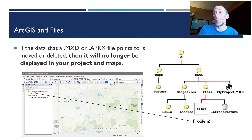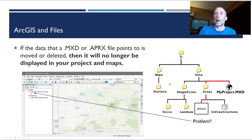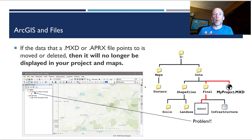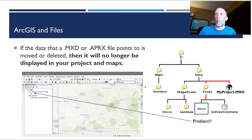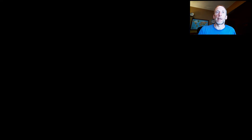The same problem happens if you move the MXD itself. If you move the MXD to a different folder, that new folder won't have the final subfolder with the geodatabase sitting beside it, so the same broken link issue occurs. It's really important when you develop these data structures that you organize and file your data within that path structure and then leave it there — don't go moving things around.